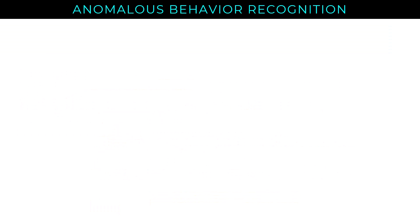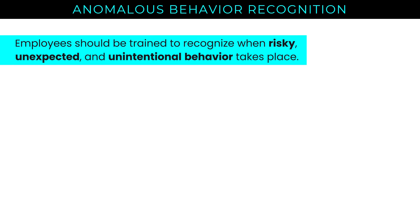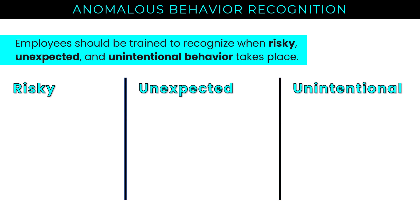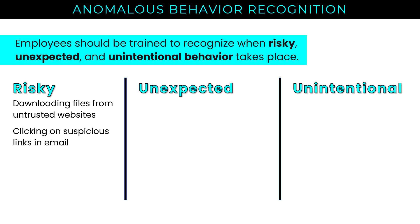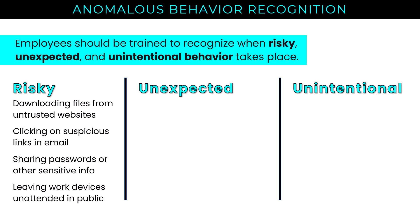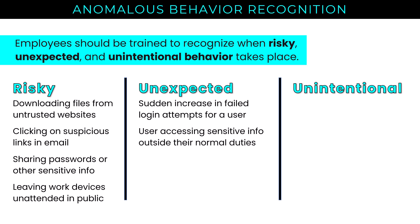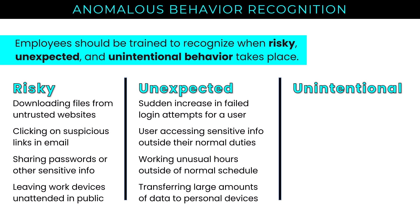Next on the syllabus: anomalous behavior recognition. Employees should be trained to recognize risky, unexpected, and unintentional behavior. Risky activities include downloading files from untrusted websites, clicking suspicious links, sharing passwords or sensitive info, and leaving work devices unattended in public. Unexpected situations include a sudden increase in failed login attempts, a user accessing sensitive information outside their normal duties, working unusual hours outside their normal schedule, or transferring large amounts of data to personal devices — which could indicate a malicious insider or a compromised identity or device.